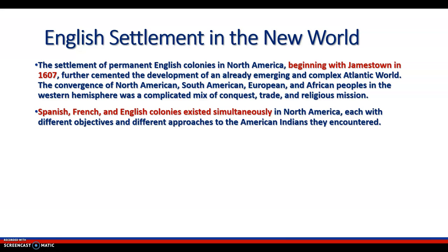English Settlement in the New World. The settlement of permanent English colonies in North America, beginning with Jamestown in 1607, further cemented the development of an already emerging and complex Atlantic world. The convergence of North American, South American, European, and African peoples in the Western Hemisphere was a complicated mix of conquest, trade, and religious missions. Spanish, French, and English colonies simultaneously existed in North America, each with different objectives and different approaches to the American Indians that they encountered.